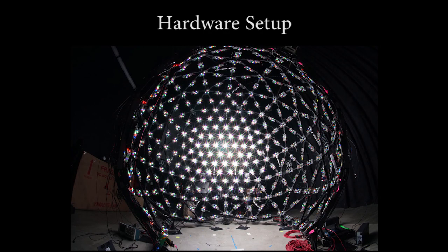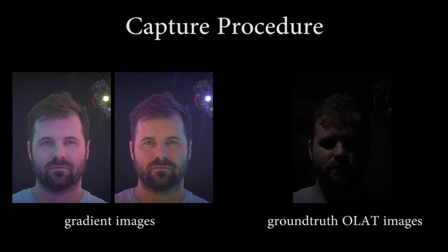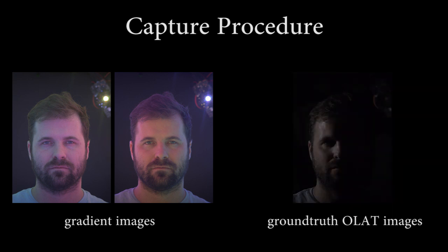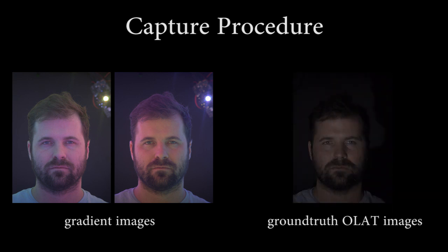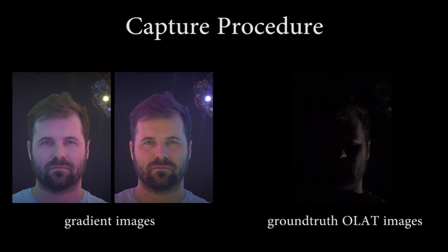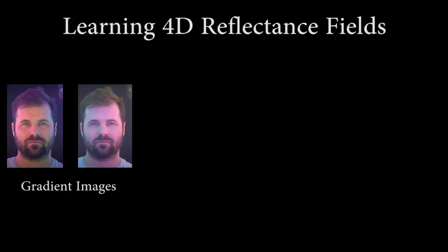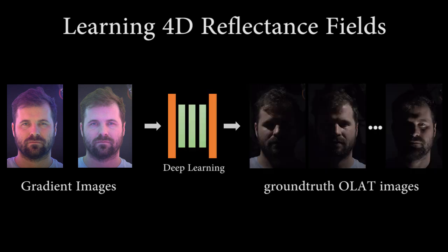Our method leverages a light stage, a spherical dome onto which hundreds of programmable lights have been mounted, to precisely control illumination. We acquire ground truth data by imaging the subject under 331 one-light-at-a-time lighting conditions, as well as under two spherical color gradient illumination conditions. Every 10 frames, we acquire a fully lit tracking frame that can be used to perform a global alignment between frames. We emphasize, though, that such an alignment is completely unnecessary at test time. We then learn to directly regress from the two gradient images to a spotlight image, such as one of the one-light-at-a-time images captured using the light stage.